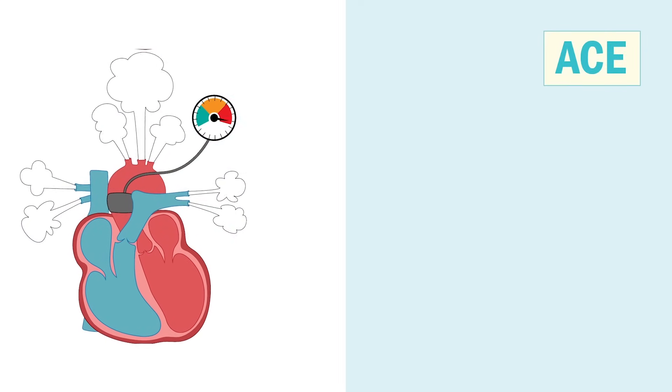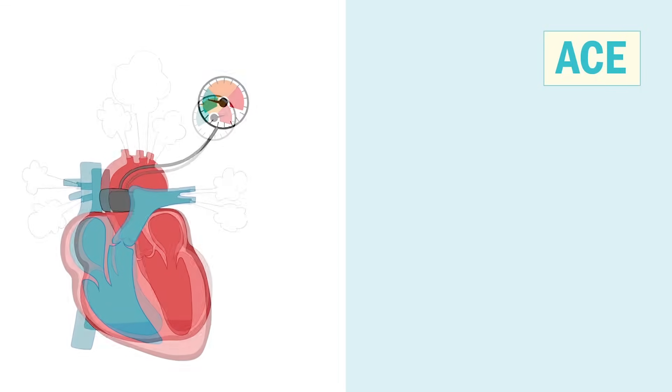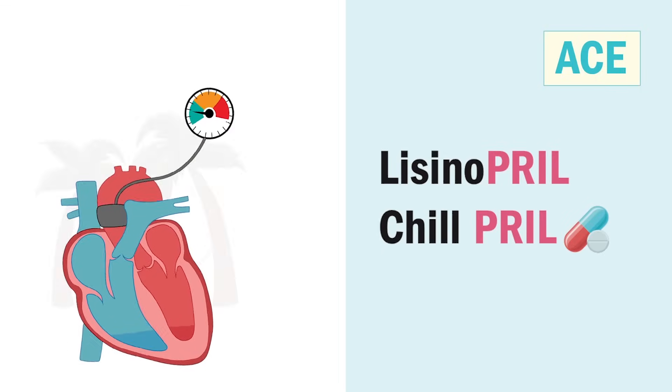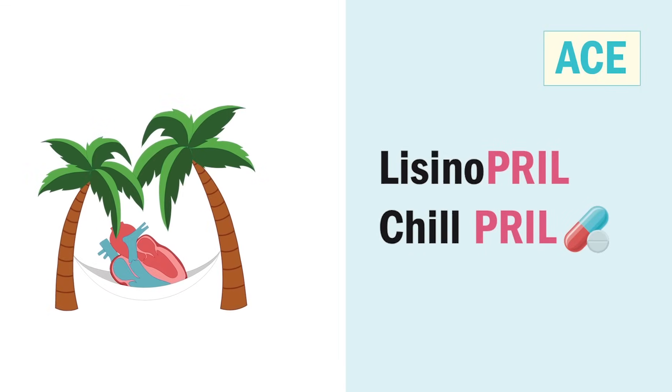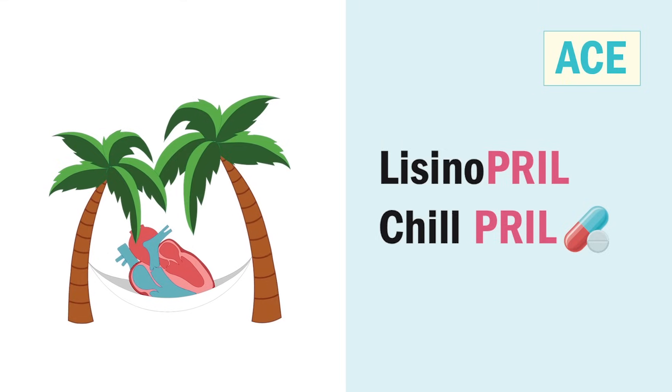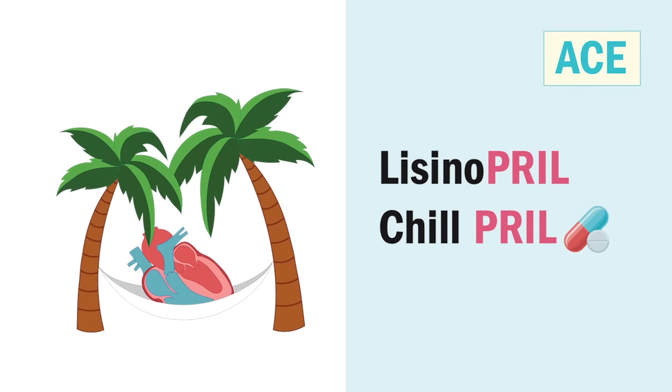A is for ACE inhibitors that lower blood pressure. These end in -pril like lisinopril. Think pril is like a chill pill for the heart. So the blood pressure lowers, we have a rested and relaxed heart.